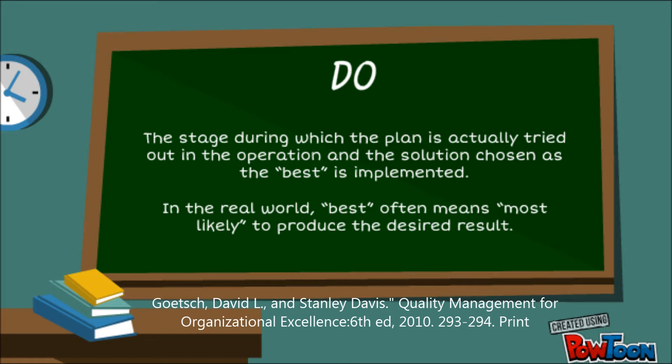The second stage is to Do — do the planned activity. This is the stage during which the plan is actively tried out in the operation and the solution chosen as the best is implemented. In the real world, best often means most likely to produce the desired result.